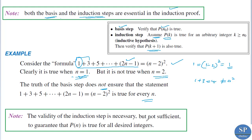The validity of the induction step is necessary but not sufficient to guarantee that P(n) is true for all desired integers. That means the induction step being satisfied alone does not make a formula true. If P(k) is true and P(k+1) follows, that is necessary. But without the basis step, the induction step alone cannot establish that P(n) is true.